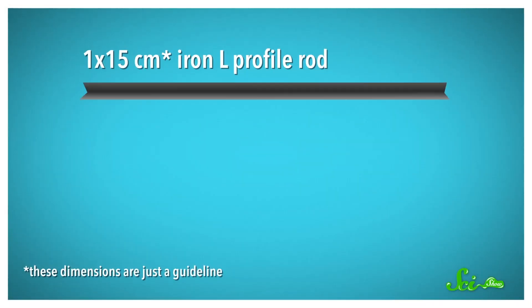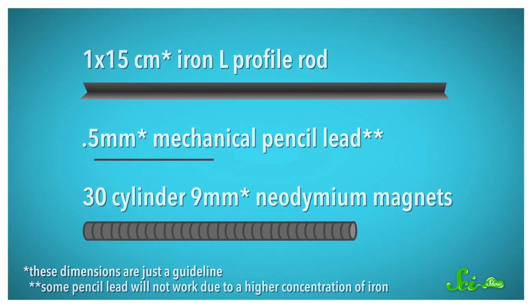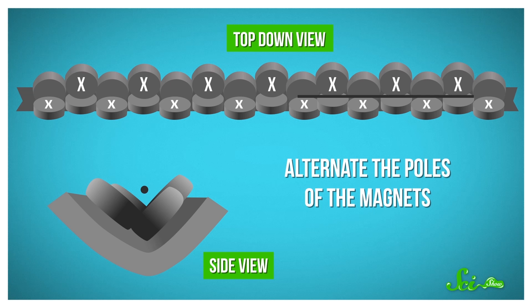If you're feeling ambitious, you can even demonstrate diamagnetic levitation yourself using an L-shaped iron rod, some neodymium magnets, and a piece of mechanical pencil lead, which is made of graphite. If you arrange it all correctly, the pencil lead will hover about a millimeter above the magnets.